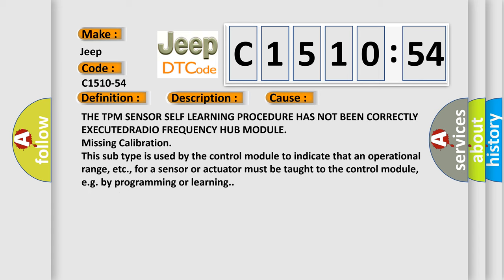This diagnostic error occurs most often in these cases. The TPM sensor self-learning procedure has not been correctly executed radio frequency hub module missing calibration. This subtype is used by the control module to indicate that an operational range, etc., for a sensor or actuator must be taught to the control module, e.g. by programming or learning.